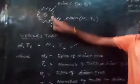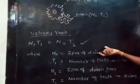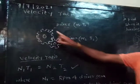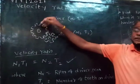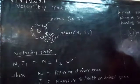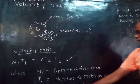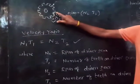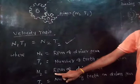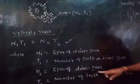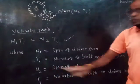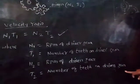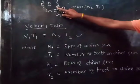N2 means RPM of the driven gear. T1 means the number of teeth of the driver gear, and T2 means the number of teeth of the driven gear. This is the velocity ratio equation.